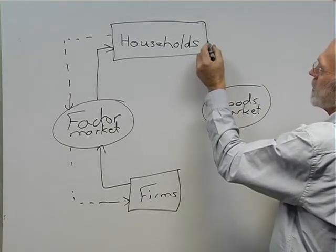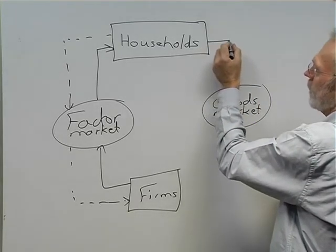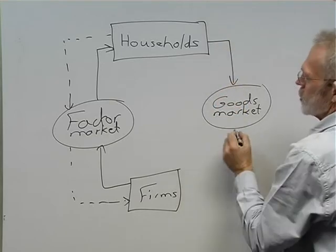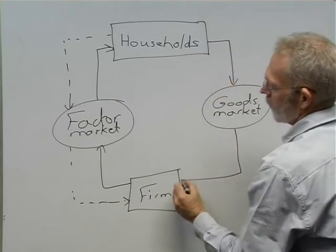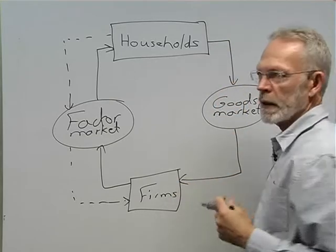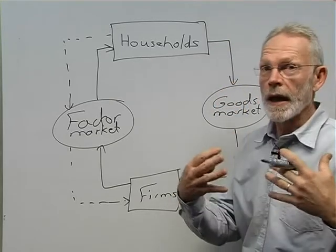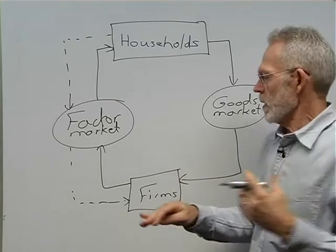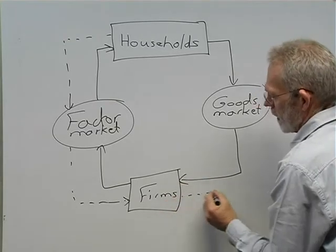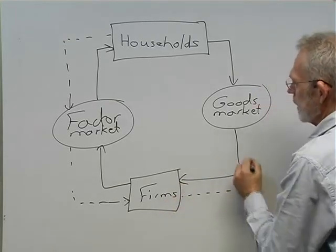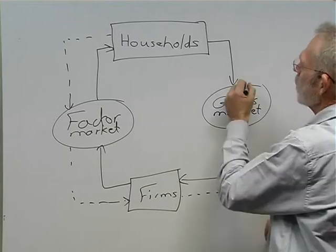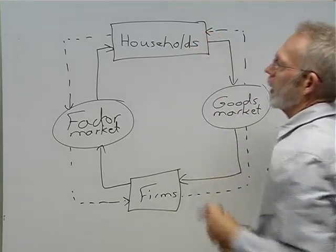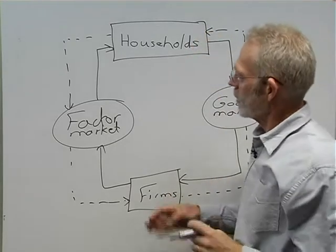So there's a flow of spending from households to firms, and in return they receive the goods and services produced by firms.